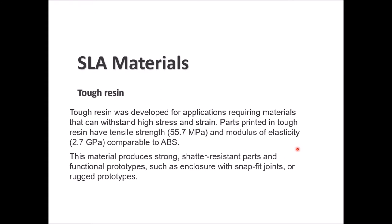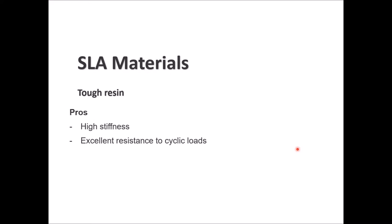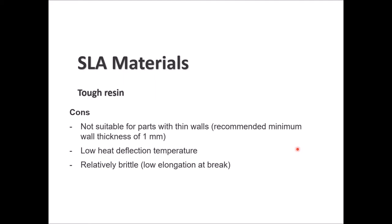Compared to ABS, tough resin can give you strong impact-resistant parts and functional prototypes, especially for enclosures, snap-fit joints, or strong prototypes. Good sides: high stiffness and very good resistance to cyclic loads. Bad sides: not fitting for parts with thin walls — a minimum of 1 mm wall thickness is required. It has low heat deflection temperature and is relatively brittle, meaning low elongation at break.